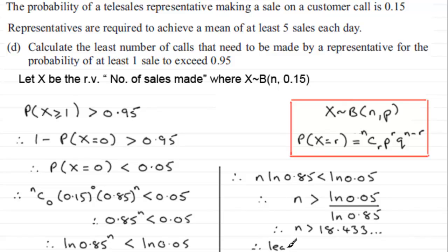So we're asked to find the least value of n, so therefore the least value of n—what's it going to be? Well, it's got to be an integer, and that least value has to be 19.